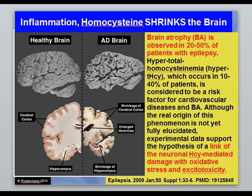Inflammation shrinks the brain. Brain atrophy — loss of brain mass — is observed in 20 to 50 percent of patients with epilepsy. Research shows a clear link between seizures, oxidative stress, and homocysteine. Patients with epilepsy need to get their methylation cycle balanced as much as anyone, which will help maintain brain mass and give them a better chance of being healthy.